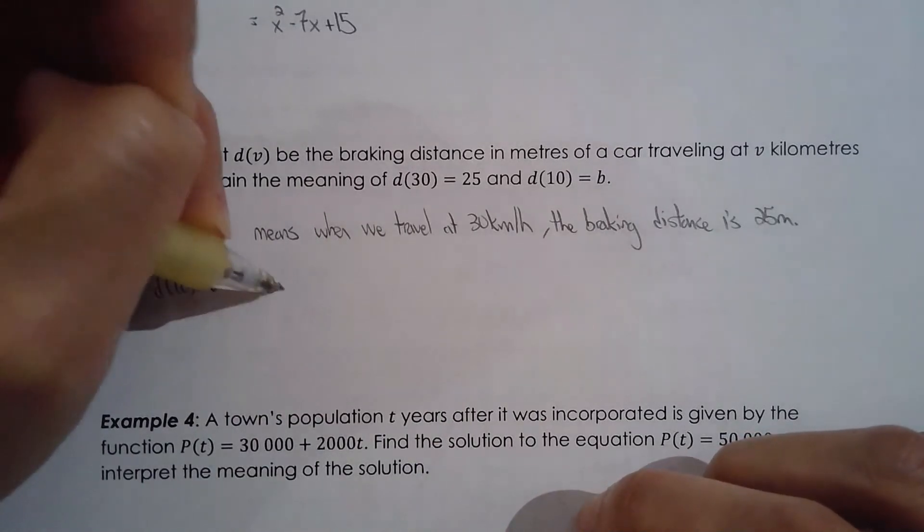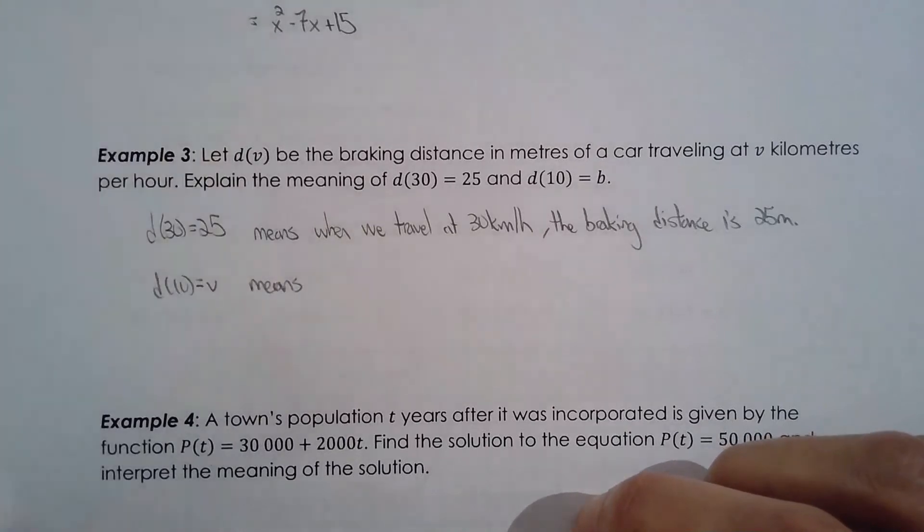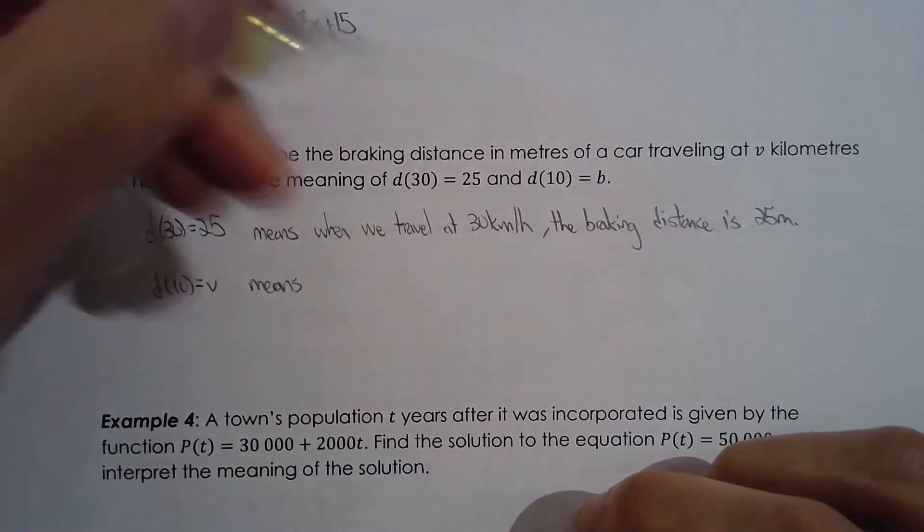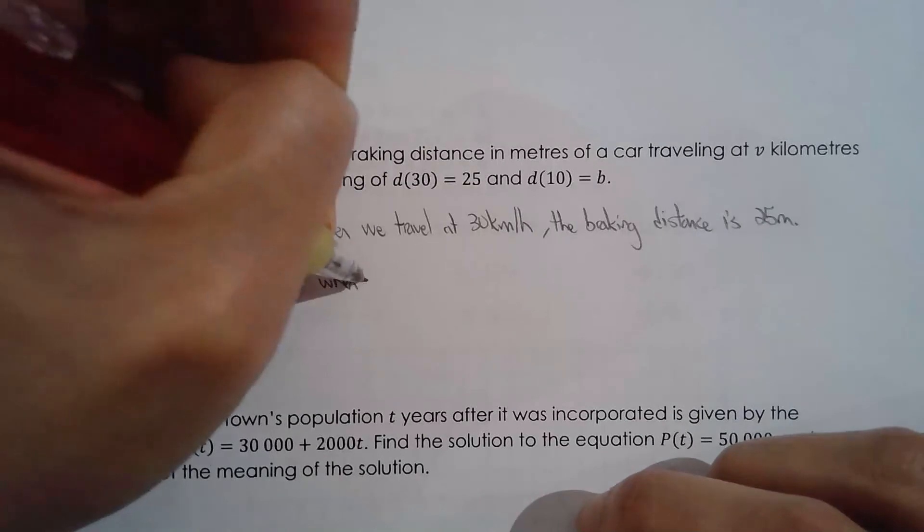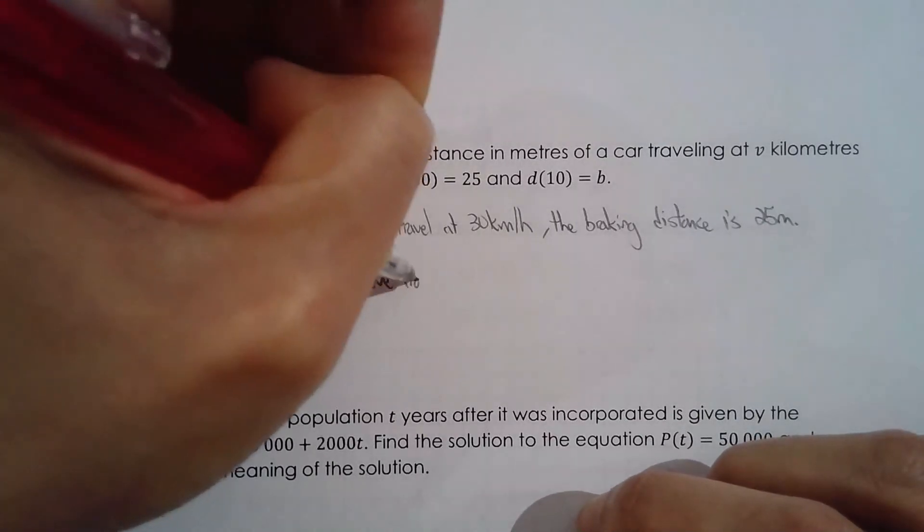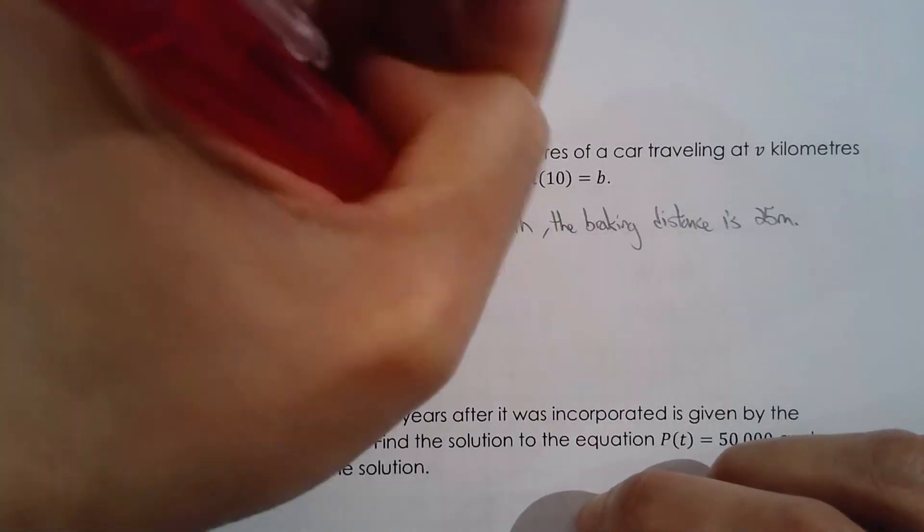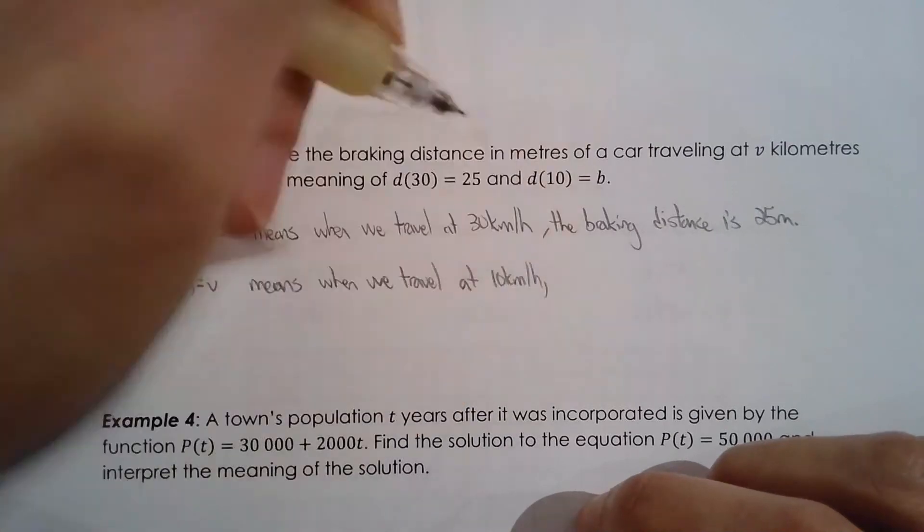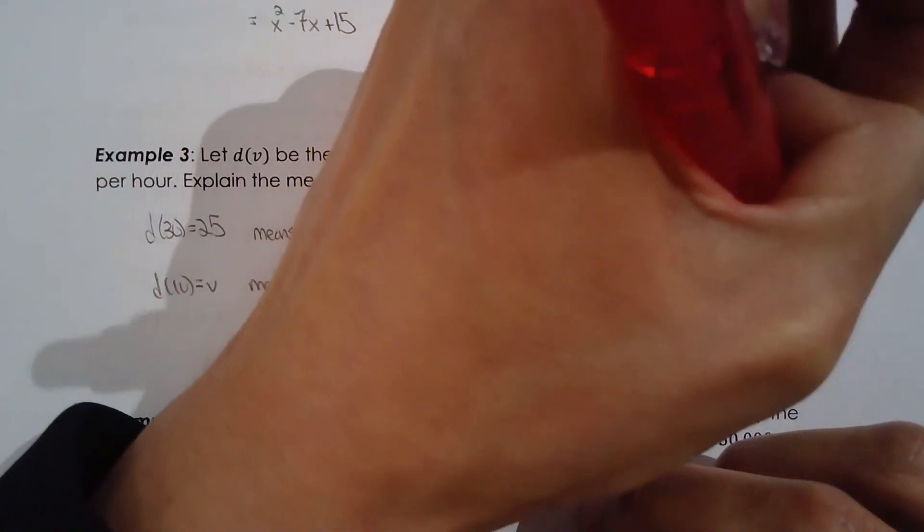And d of 10 equals v means exactly the same. Input is 10, output is v. Means when we travel at 10 kilometers per hour, the braking distance is v meters.